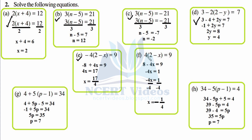Part f: 4 times (2 minus x) equals 9. Expanding: 8 minus 4x equals 9. Transpose 8 to the right: minus 4x equals 9 minus 8, which is 1. Get rid of minus 4 by dividing both sides by minus 4, so x equals minus 1 over 4.